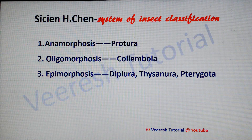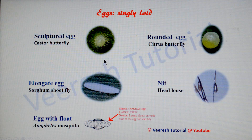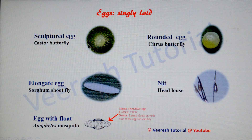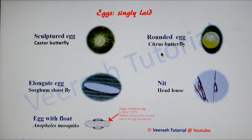The first stage of development in all insects is the egg. For singly laid eggs, the first type is the sculptured egg, where the chorion has reticulate markings and ridges — butterflies lay sculptured eggs. The second is the elongated egg, which is cigar-shaped, seen in sorghum shoot fly eggs. The third is rounded eggs, which are either spherical or round in shape, seen in citrus butterfly eggs.